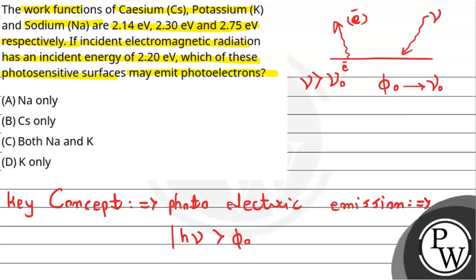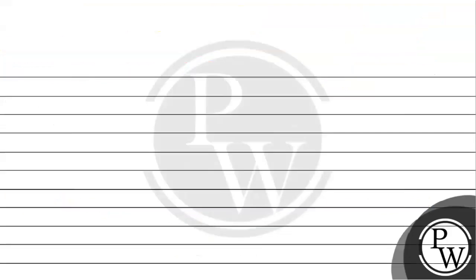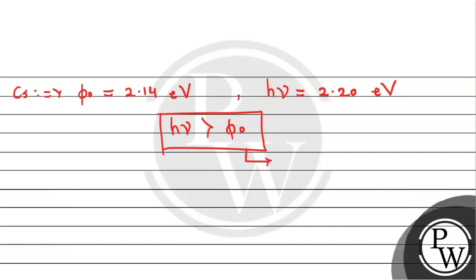The concept says that the incident energy hν must be greater than the work function. So let's first talk about cesium. For cesium, we are given the work function equals 2.14 electron volt, and the incident energy is given as 2.20 electron volt.